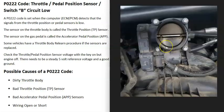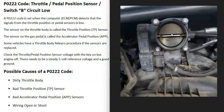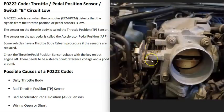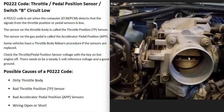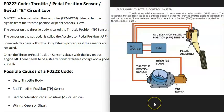Basically, engines have what's called a throttle body, and there's what's called a throttle plate or butterfly plate. When the gas pedal is pressed, this plate opens up and lets more air go into the engine. When throttle bodies were first introduced, they had a cable that went down to the gas pedal, so when the gas pedal was pressed this plate opened up.